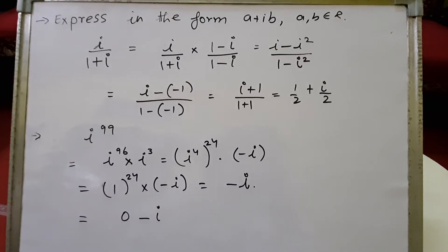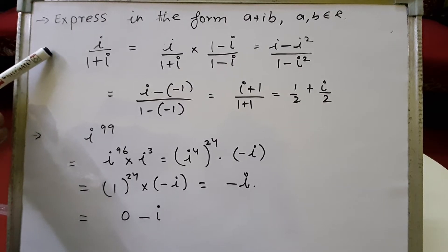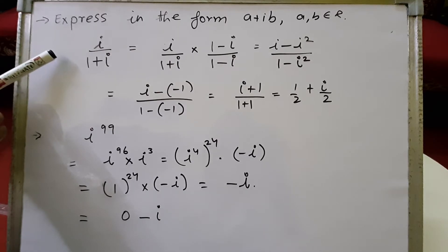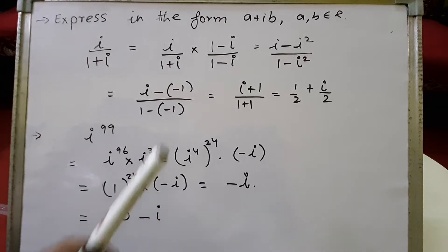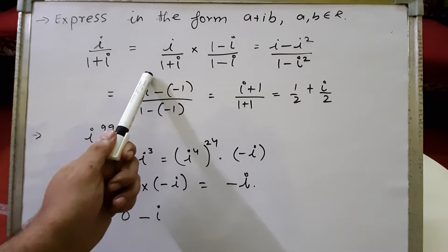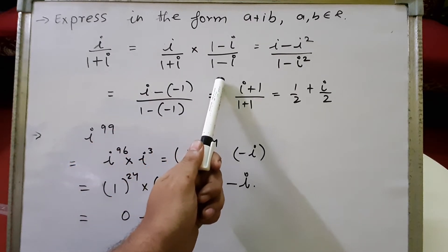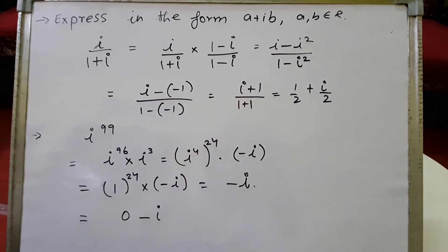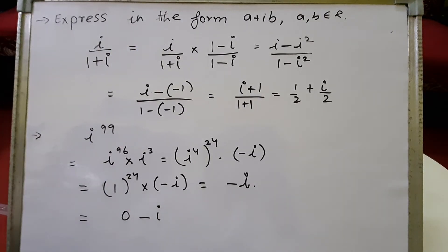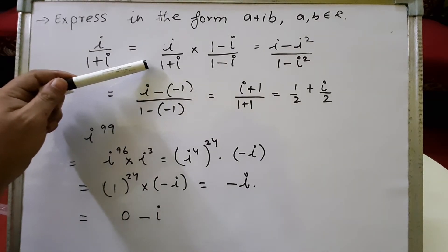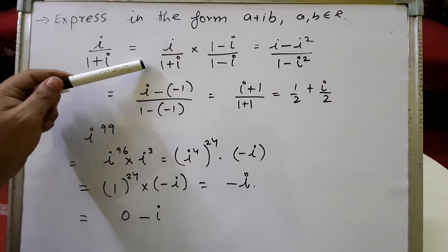Now let's discuss some examples. In this sum we have to express i upon 1 plus i in the form a plus ib, where a and b belong to real numbers. To simplify i upon 1 plus i, we multiply the numerator and denominator by the conjugate of the denominator, which is 1 minus i. In the numerator this gives i into 1 minus i, which is i minus i squared.